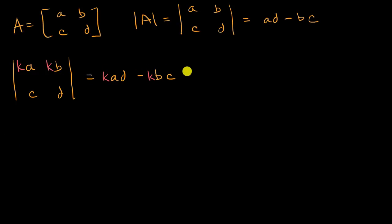And so this is equal to K times AD minus BC, which is the same thing as K times our original determinant of our matrix A.